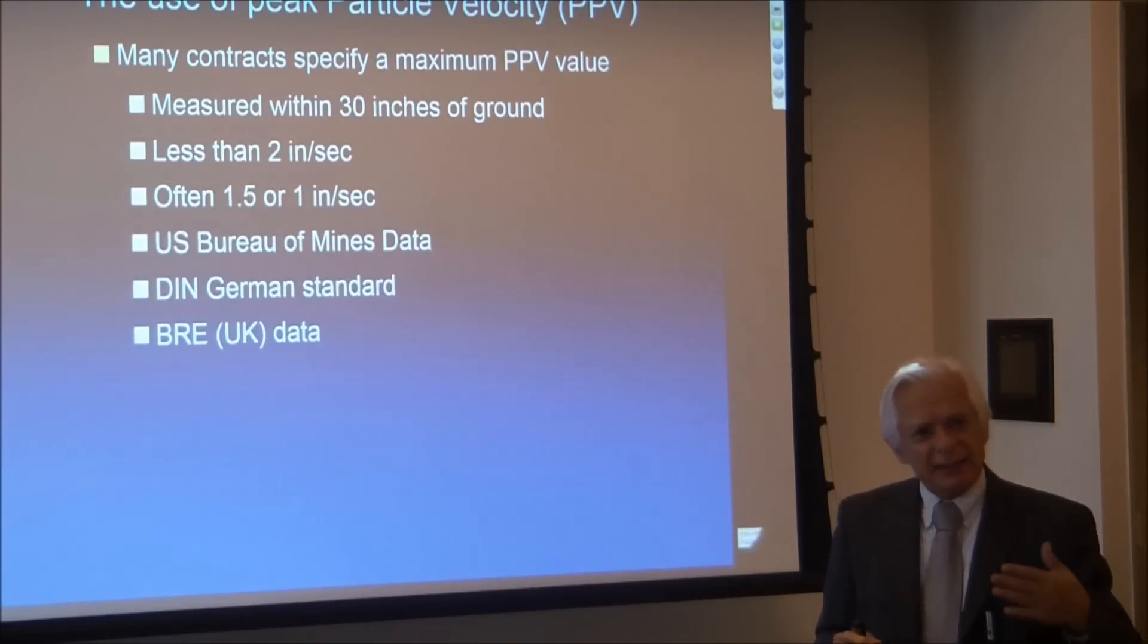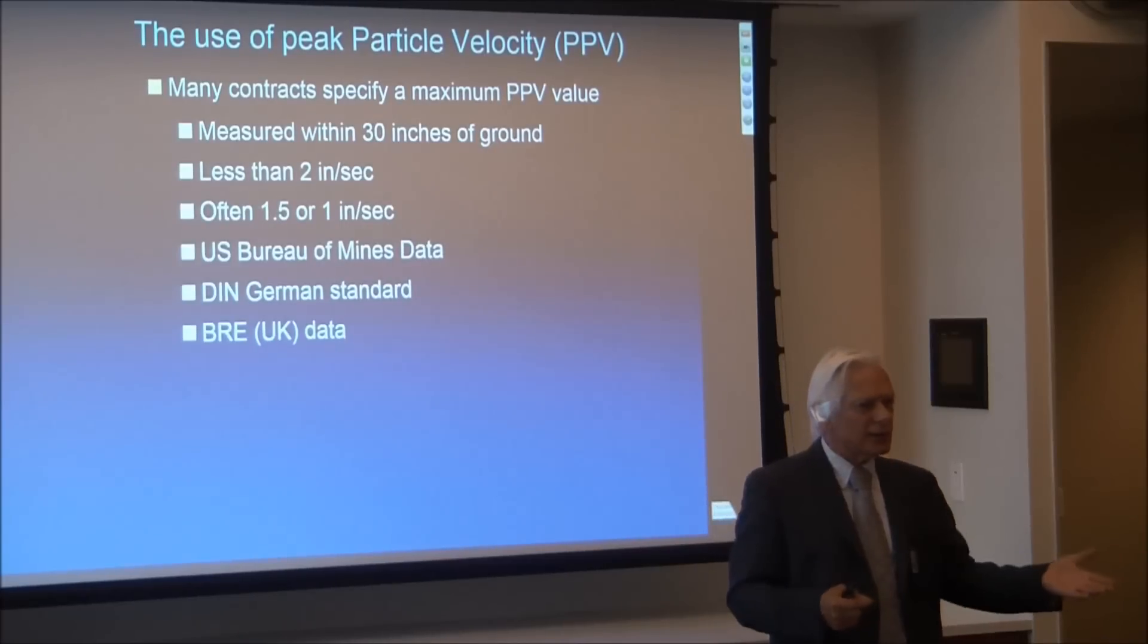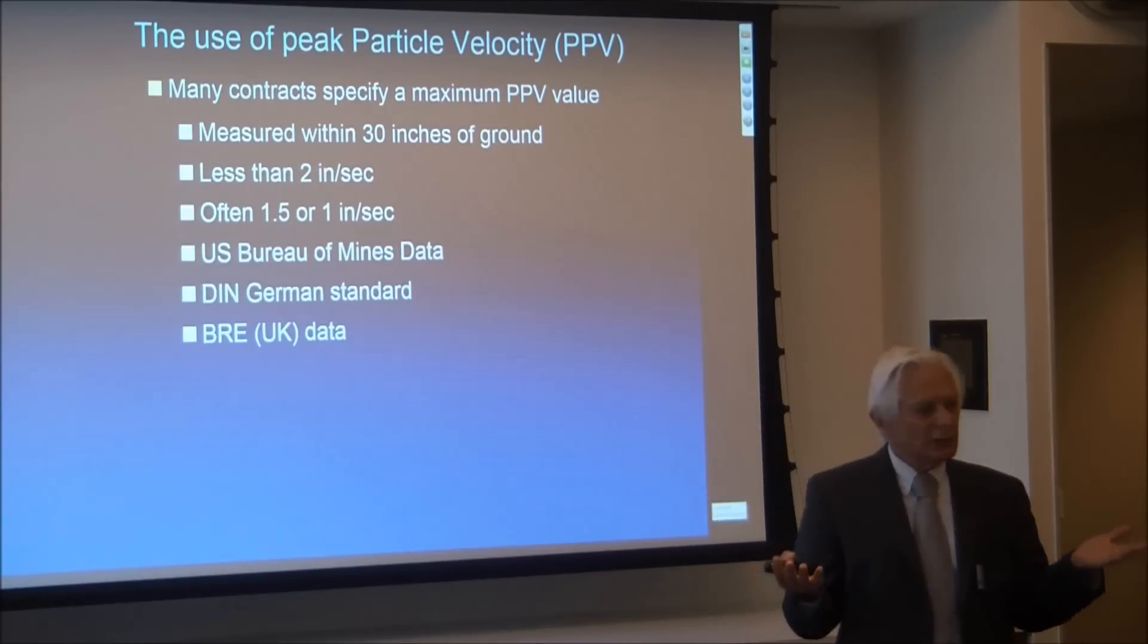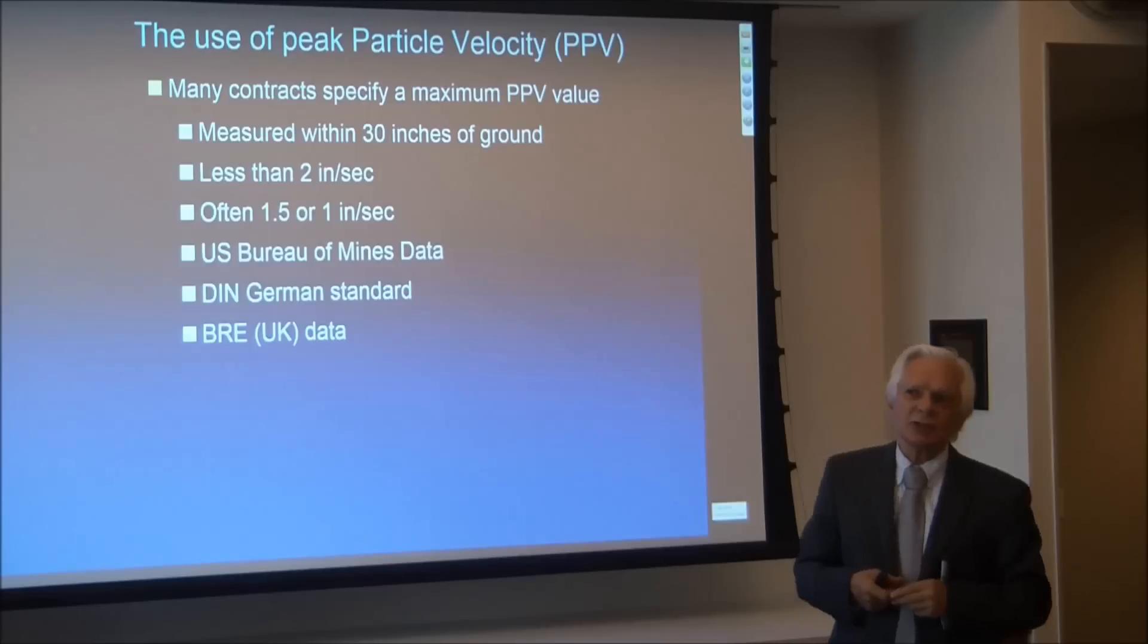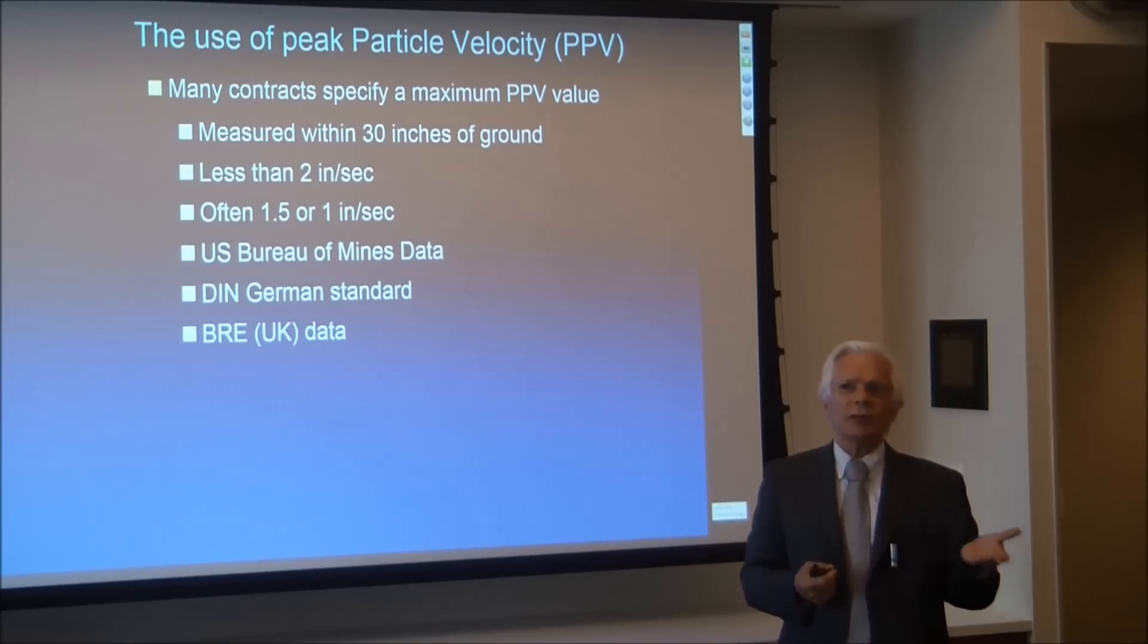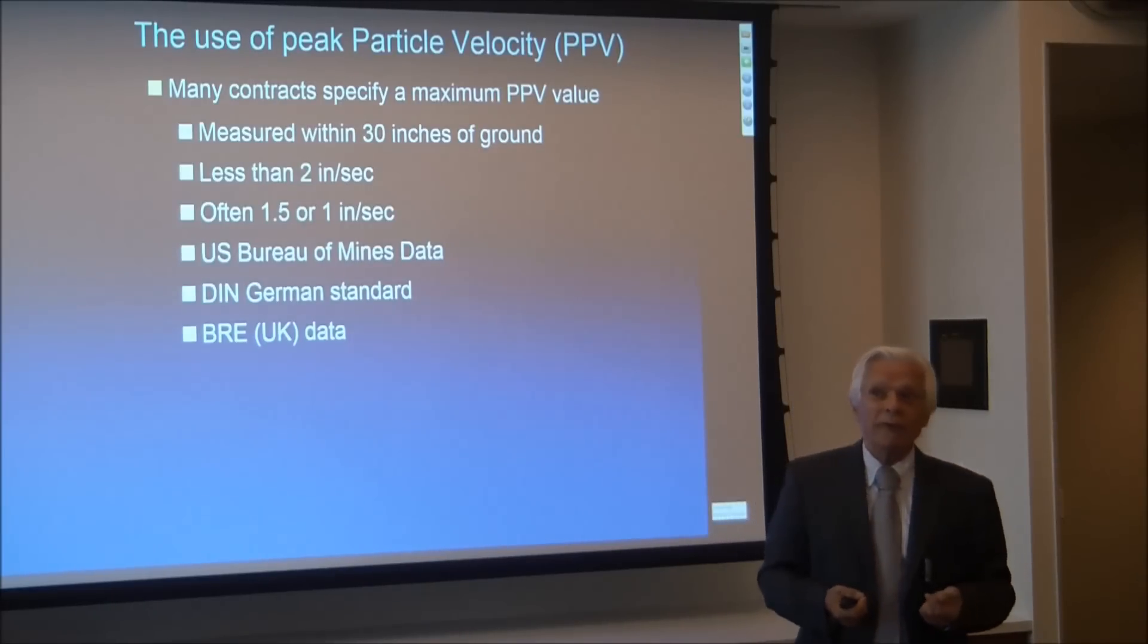In that discussion, I've said to you the legal framework says that a contractor will be issued with a document saying that he must not go above some value of peak particle velocity. And I've already said as well, peak particle velocity comes from data which were collected before 1981. So the contracts themselves tend to say that peak particle velocity must be measured within 30 inches of the ground, certainly less than 2 inches per second, and as I've said probably 1.5 or 1, comes from the US Bureau of Mines data.